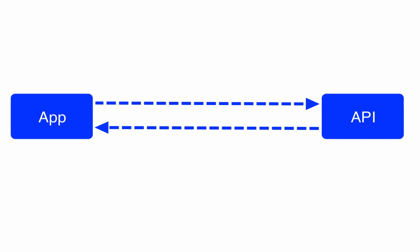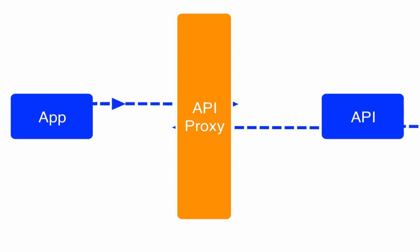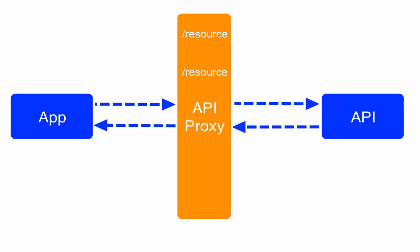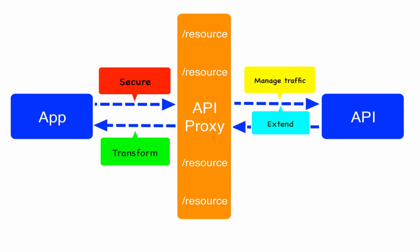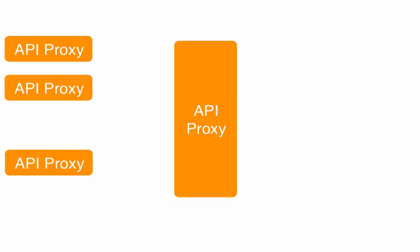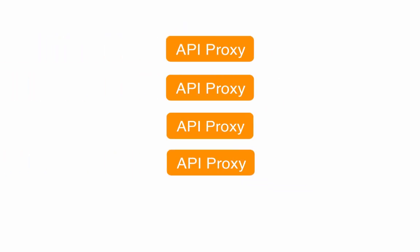First, you'll create an API proxy which serves as a facade between your API and the apps calling it. You'll also define resources that model the structure of your API's resources to give you fine-grained control. Then you'll attach any number of out-of-the-box policies along the proxy flow to take care of securing, transforming, and mediating API messages.